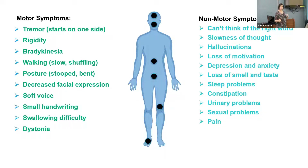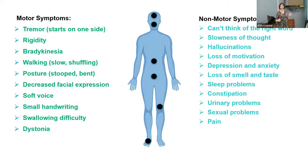Similar to low dopamine levels, serotonin and norepinephrine are also low in Parkinson's disease — chemicals in your brain very important for mood, and they're low in all Parkinson's patients. Patients who had a predilection for depression before diagnosis may experience more depression and anxiety. Some patients have had severe depression and anxiety for two years before any symptoms of Parkinson's disease appear, because that can present first. We have ways to treat that, so please let us know.